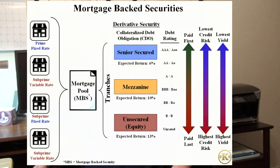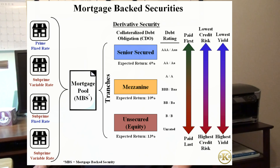Lower tranches cannot receive their portion of the monthly payment from the original mortgage-backed security until the higher tiers have received their full payments. This system of payments creates the credit risk for each tranche. Holders of lower tranches are compensated for the chance they may not receive payment by receiving a higher yield.